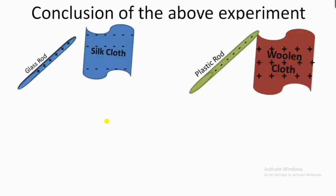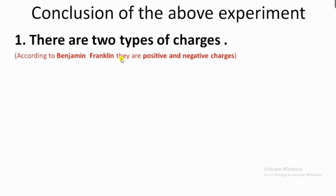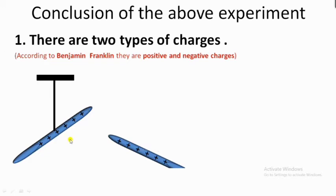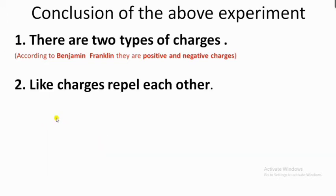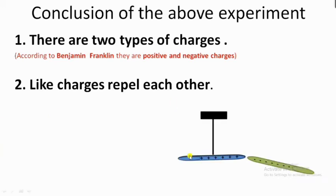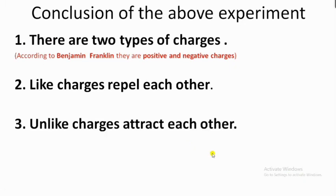We can conclude that unlike charges attract each other because the glass rod and plastic rod were charged differently. From these experiments we can conclude: when two objects are rubbed they get charged oppositely, so there are two kinds of charges. Glass rod is positive, silk cloth is negative; plastic rod is negative, woolen cloth is positive. The names 'positive' and 'negative' were given by Benjamin Franklin. Like charges repel and unlike charges attract each other.